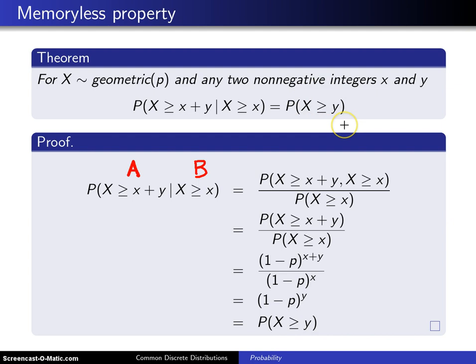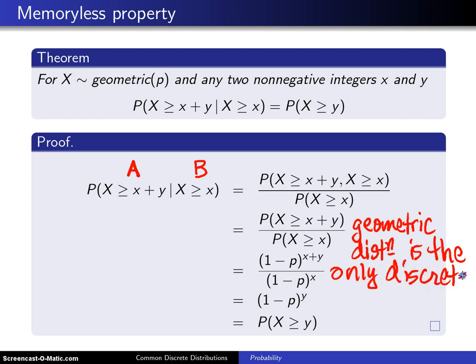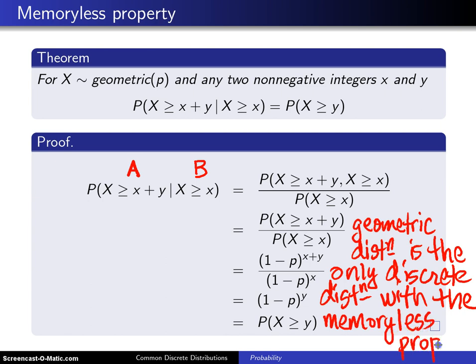It turns out that the geometric distribution is the only discrete distribution with the memoryless property, and that is a big deal, because there is only one continuous distribution with the memoryless property, and that distribution is the exponential distribution. So this is a very rare property to have, and the geometric is the only discrete distribution with this property.